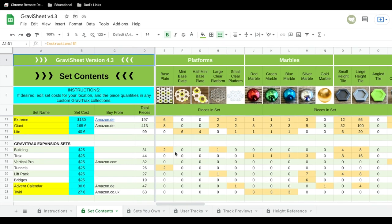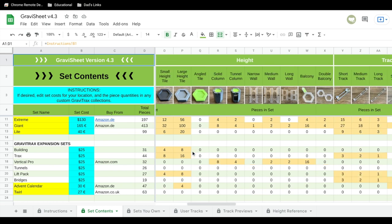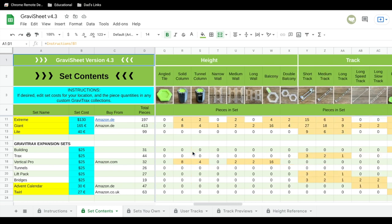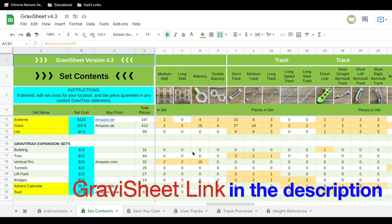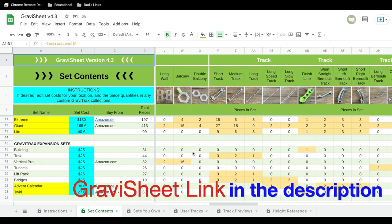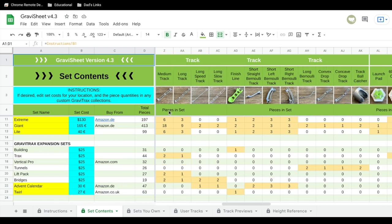First of all, we have all of these sets in Grab-A-Sheet that have been recently released. The Extreme Starter Set, the Giant Starter Set, the Light Starter Set, the Advent Calendar, and the Twirl. You see those are highlighted on the left and if you scroll to the right, if you go under Set Contents tab, it'll show you all the pieces that are in those sets. So check out Grab-A-Sheet, check out what's been recently released from Ravensburger. See if you want to buy it and you can just see what's in it before you buy.